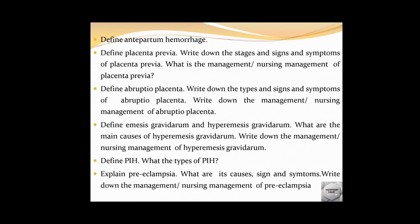Define PIH — pregnancy-induced hypertension — very important topic. Its types include preeclampsia and eclampsia, which can be asked separately. Questions on preeclampsia: what is it, signs and symptoms, causes, management and nursing management. If the question says 'explain preeclampsia' or 'explain eclampsia,' write definition, signs and symptoms, causative factors, diagnostic criteria, medical treatment, surgical treatment, and nursing management. Always check the marks weightage and write accordingly — more marks means more detail.